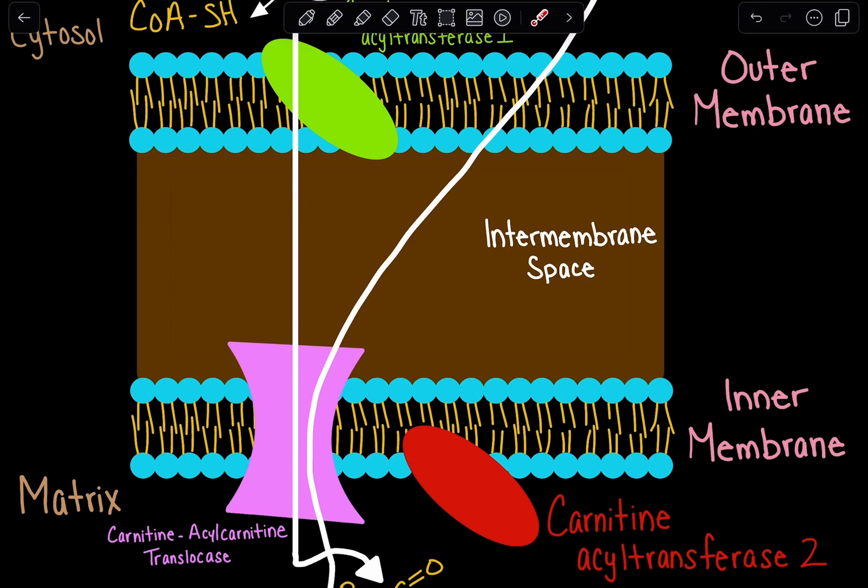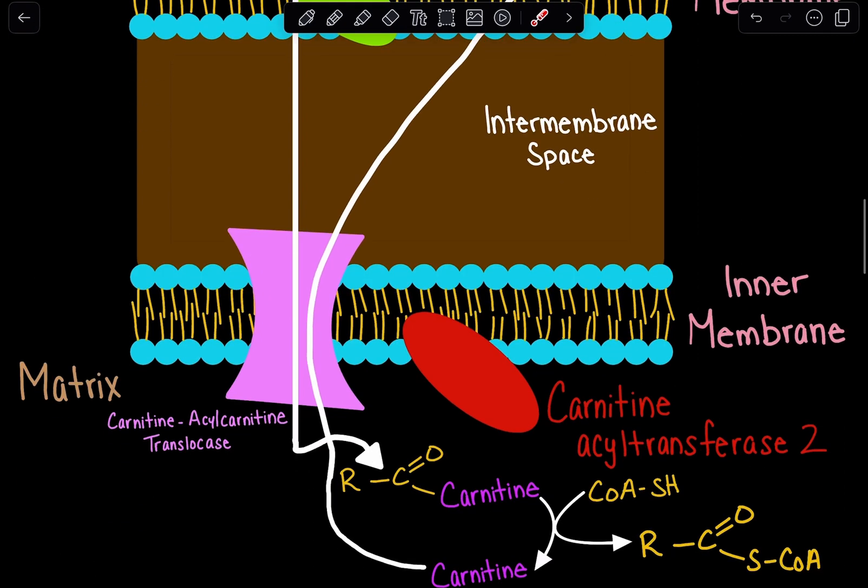They are not permeable to the inner membrane, so they're going to utilize a special transport system, this being the carnitine shuttle system.